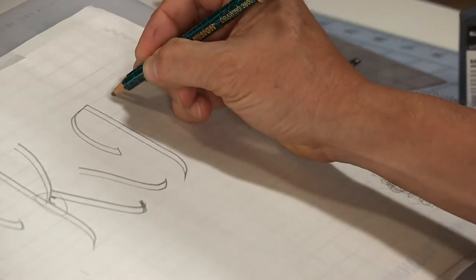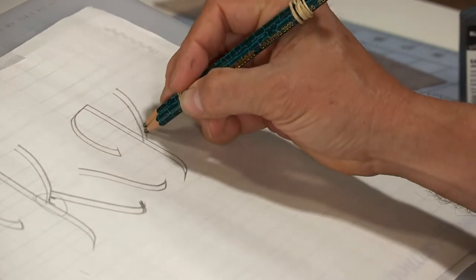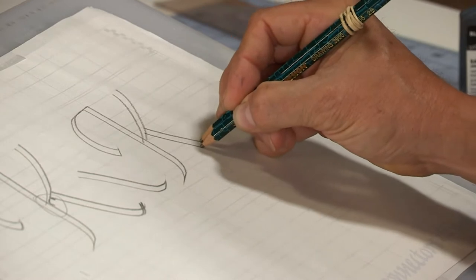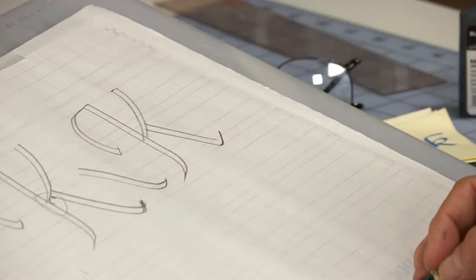So again, this stroke is a simple curve, and then the third leg is a straight line with a little curve kicking out at the bottom, the capital K.